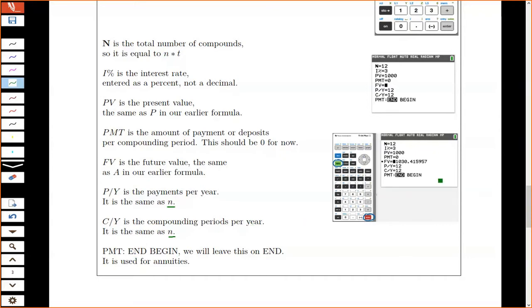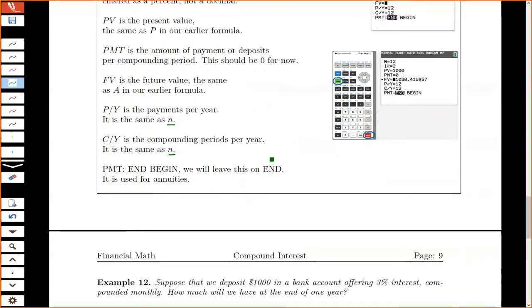This payment end begin thing, we're always going to leave at end. And for now, it won't be necessary. But when we talk about annuities and installment loans, then that'll come into play. If we leave it on end, then we'll always match up with our formulas.